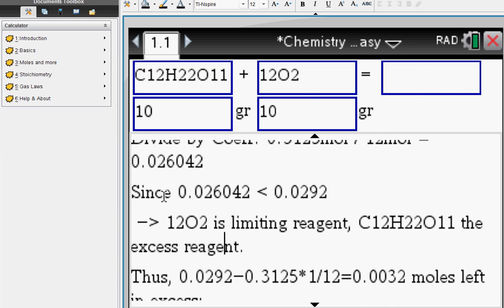And then we end up with C12O2 as a limiting reagent and the other one is obviously the excess reagent.